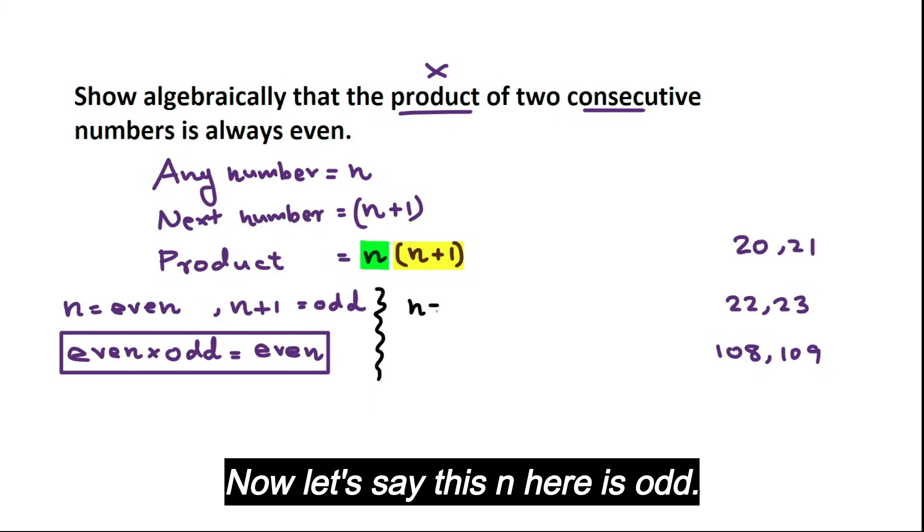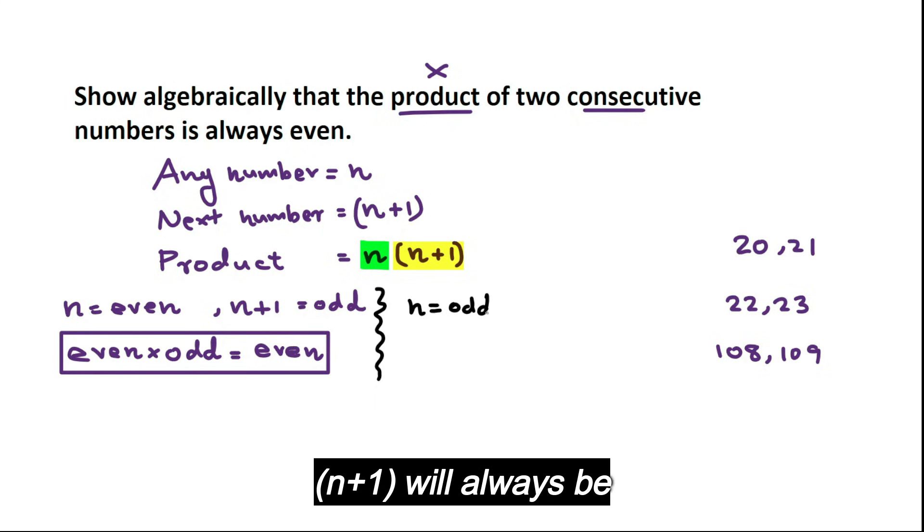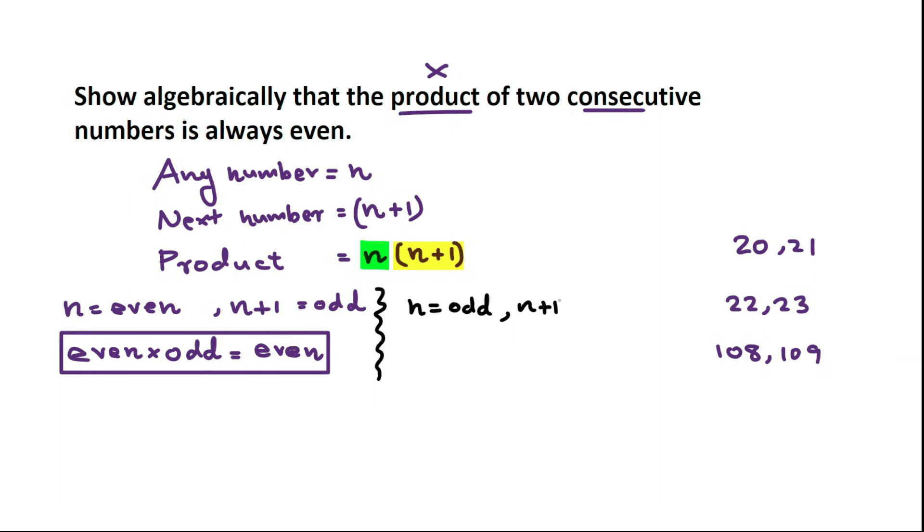Now let's say this N here is odd. N+1 will always be even.